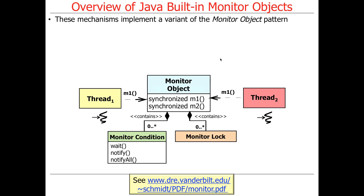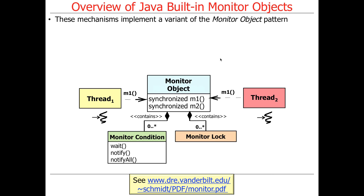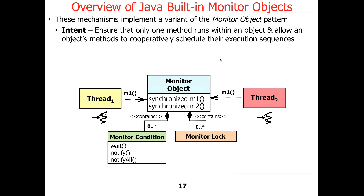These mechanisms implement a variant of the monitor object pattern. Unlike the Java monitor object, the full monitor object pattern can have a multiplicity of locks or conditions — which is why Java's java.util.concurrent class libraries provide condition objects to more fully implement the pattern. Java's built-in version is a stripped-down, lightweight variant baked into the language. The intent of the monitor object pattern is to ensure that only one method runs within an object at a time, and to allow the object's methods to cooperatively schedule their execution sequences — restating mutual exclusion and coordination.